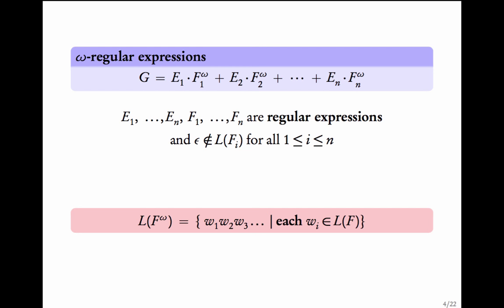In general, an omega regular expression looks like this. e1, e2, ..., en and f1, ..., fn are regular expressions over languages of finite words. Given these, you can form an omega regular expression: e1·f1^ω + e2·f2^ω + ... + en·fn^ω.